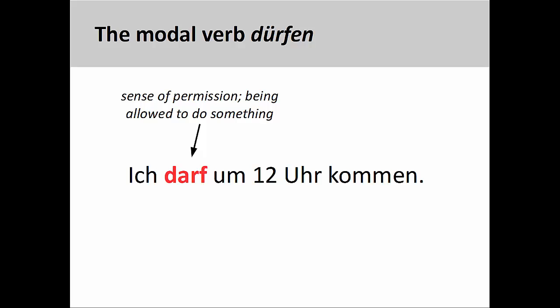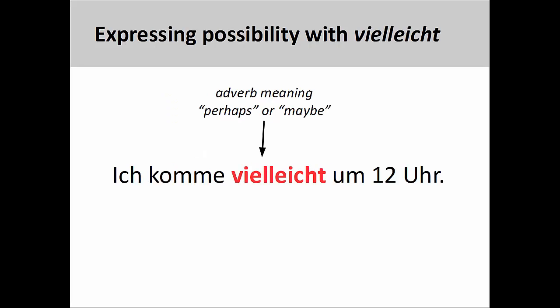The modal verb dürfen conveys a sense of permission, a sense of being allowed to do something. In the sentence you see on the screen, Ich darf um 12 Uhr kommen, the subject of the sentence has permission or is being allowed to come at 12 o'clock. It is important to note that dürfen does not express possibility as does the English 'may' — for example, 'I may possibly come at 12 o'clock.' To express this concept in German, we would use the adverb vielleicht, meaning 'perhaps' or 'maybe,' in conjunction with the verb: Ich komme vielleicht um 12 Uhr.